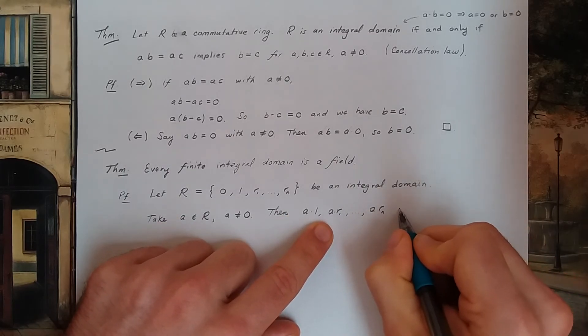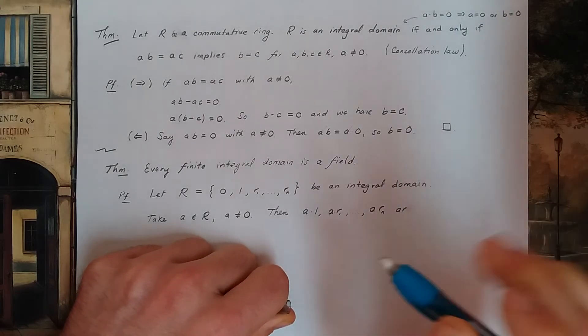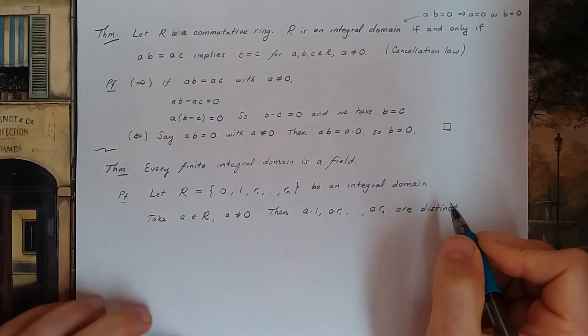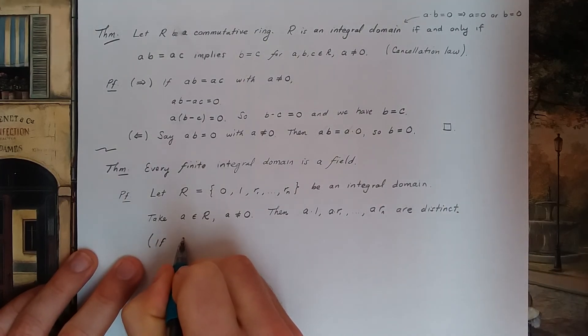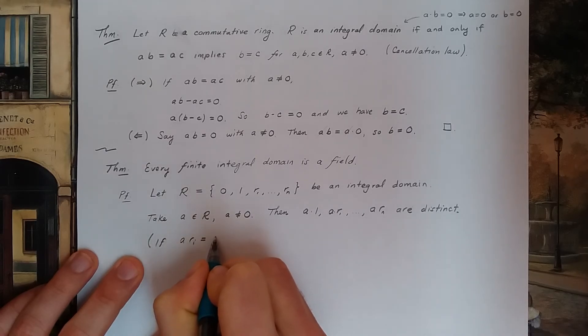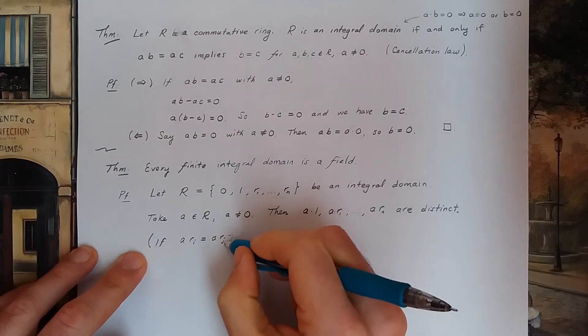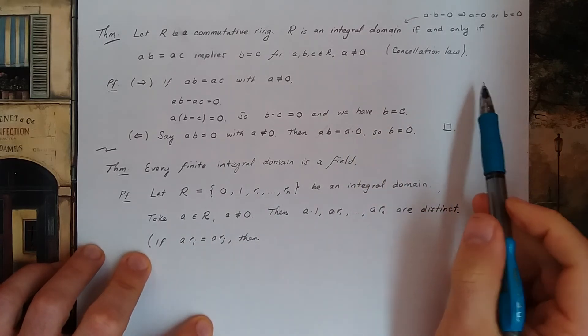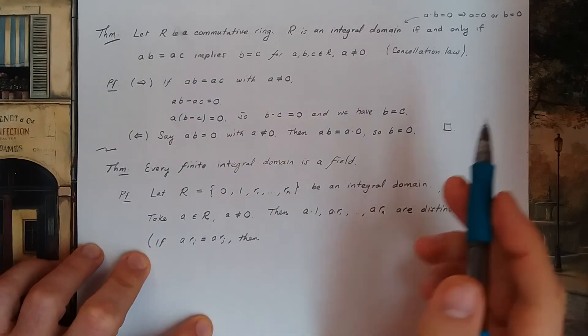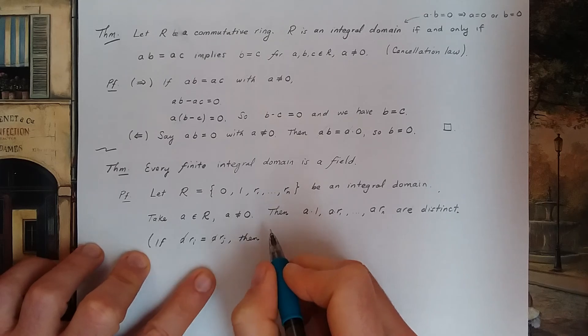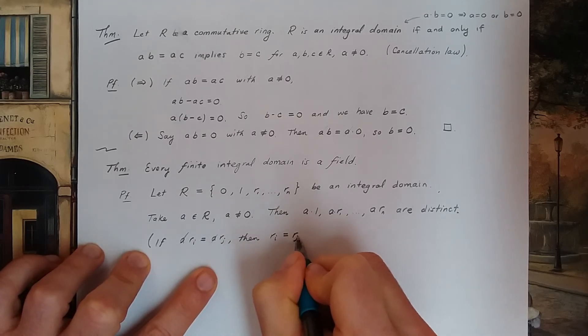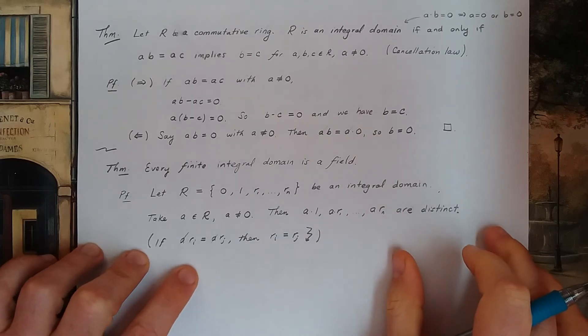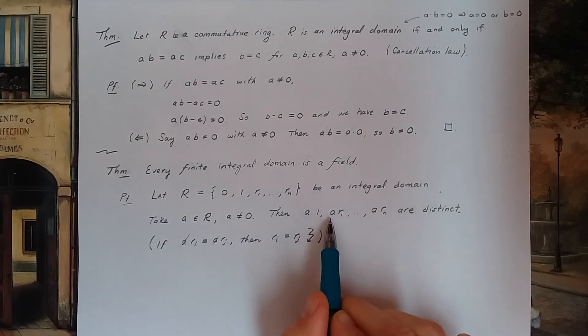I claim these are distinct. These ring elements are all different. Why? If you ever had like a times ri equaling a times rj, so if two of these things on my list happen to be equal, then the cancellation laws hold. That's what we proved in this previous theorem. If I have an integral domain, then the cancellation laws hold. I can cancel the a. A is not zero. So I have ri has to equal rj. If i and j are different, that doesn't happen. That's the contradiction. So I have all these distinct elements in my ring.